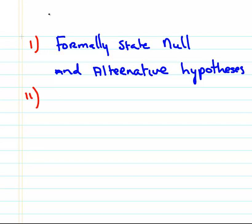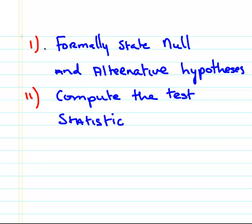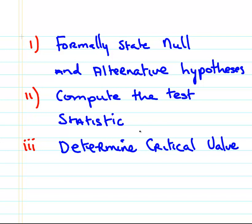So the second step will be compute the test statistic. Conventionally, the next step is to determine the critical value. Now this would depend on a couple of things, particularly the level of significance. And I'm going to use the significance level here of 0.05. So this is what they call significance, and that's an important part of hypothesis testing.